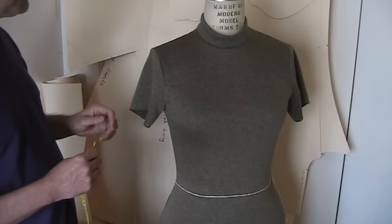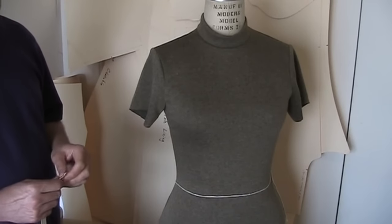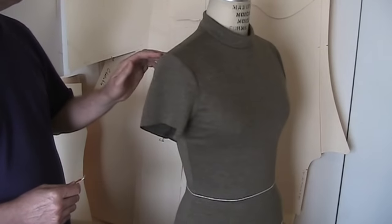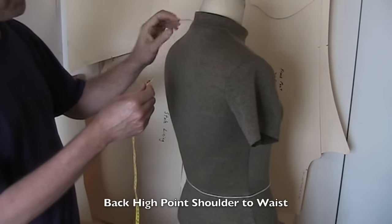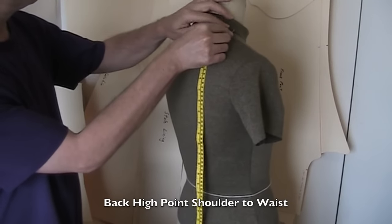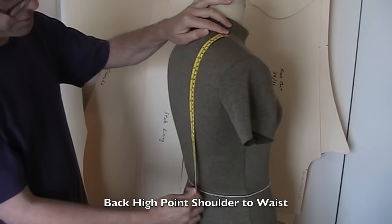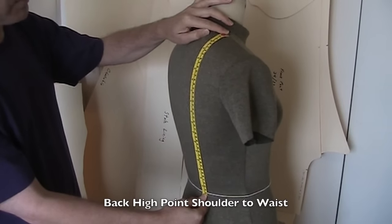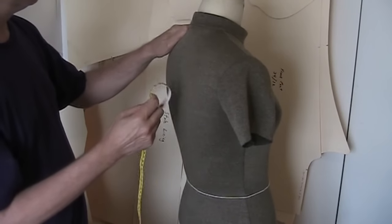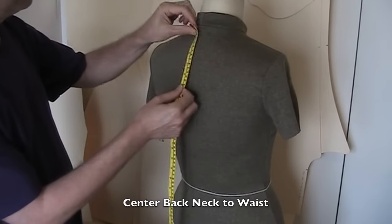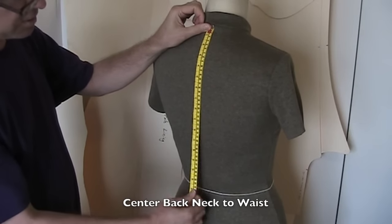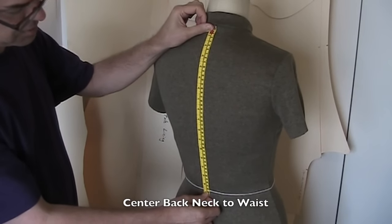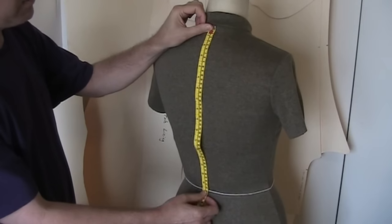Anyway, the measurements you'll need for this particular draft method, the first of them is going to be the back high point shoulder to waist measurement. My form is measuring 17 and a half. Next, you'll need the center back neck to waist measurement. In this case, 16 and a half.